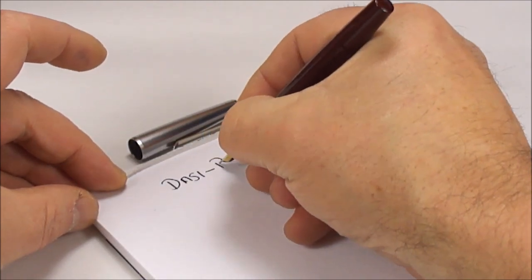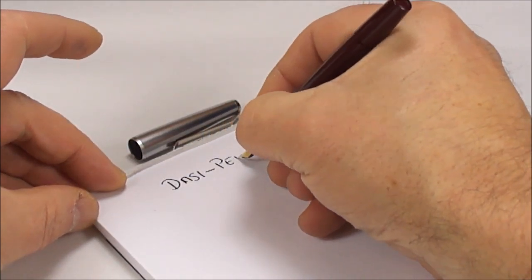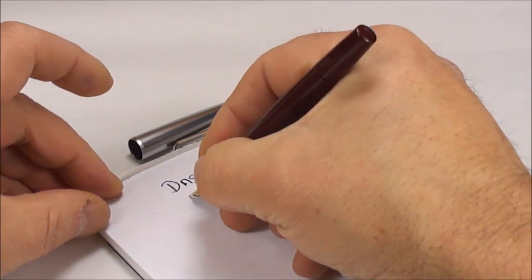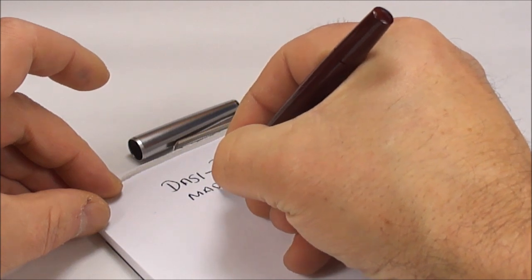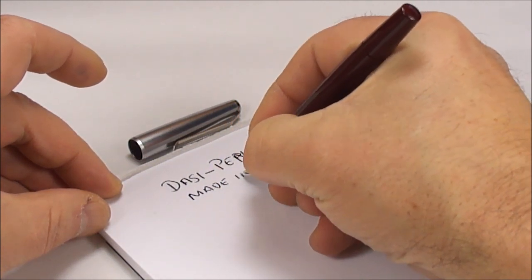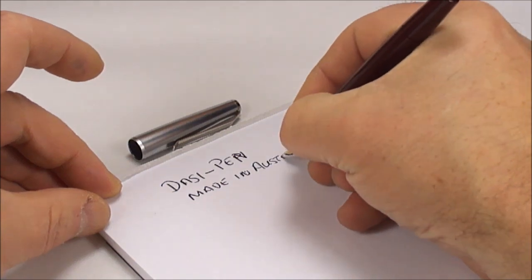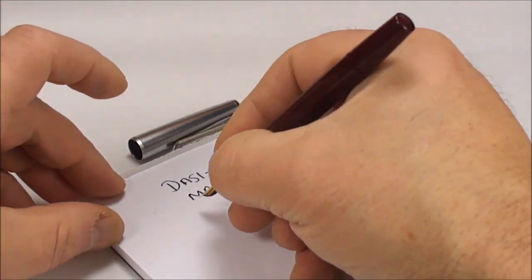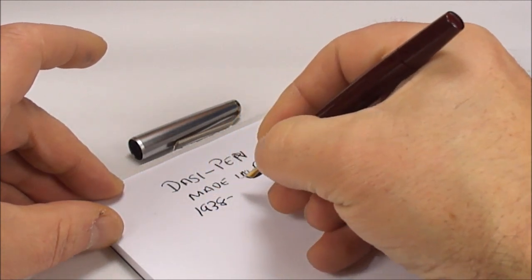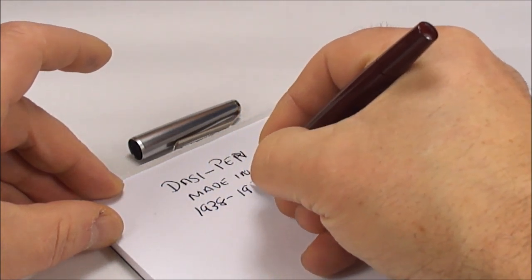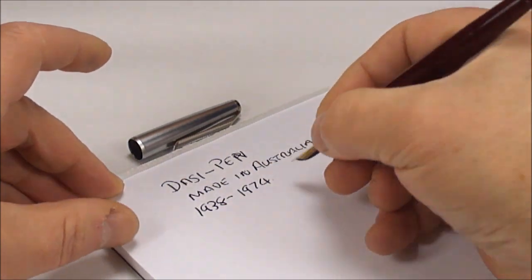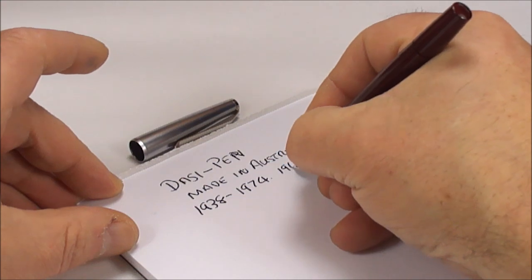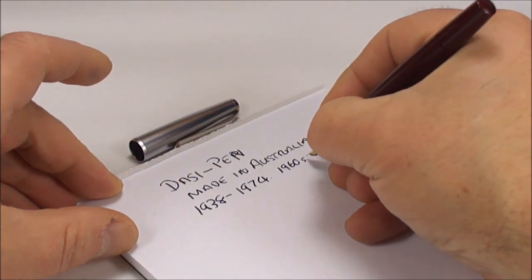So what we've got is a Dazzy pen. And as I said, these pens are made in Australia. And Dazzy pens, as we said a little bit earlier, were made from 1938 right through to around about 1974. Although this particular shorthand, I believe they brought it out in the 1960s.